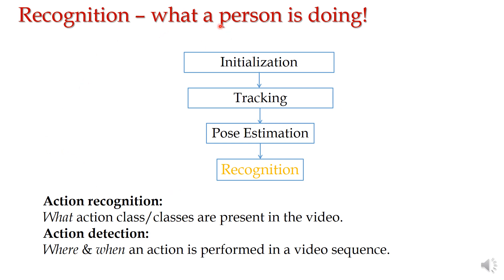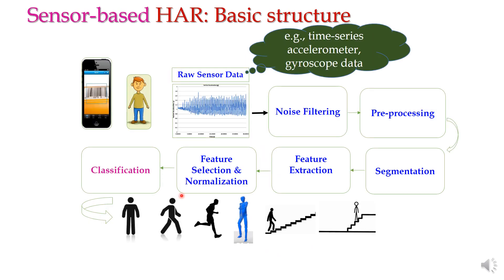Recognition means understanding what a person is doing. In video or sensor cases, we need to initialize, sometimes track, and estimate pose before performing recognition. Action recognition means identifying what action or class is present in a video. Action detection, covered in some papers, means identifying where and when an action occurs in a video sequence. In the sensor domain, raw time-series data from accelerometers or gyroscopes is collected.